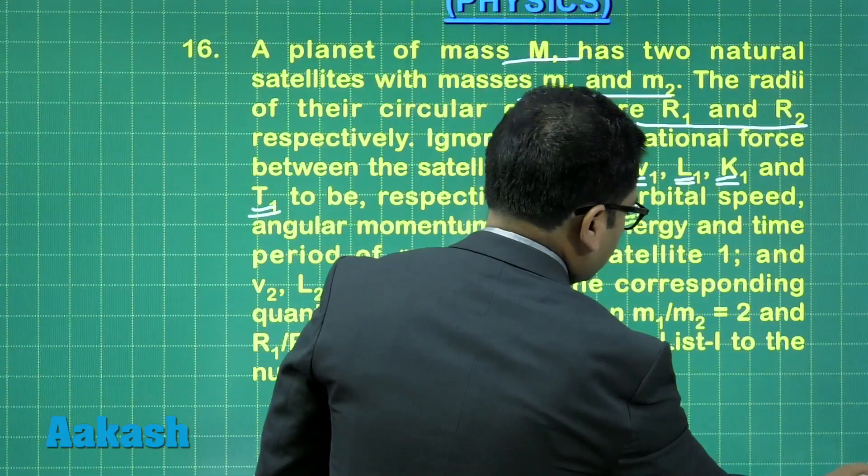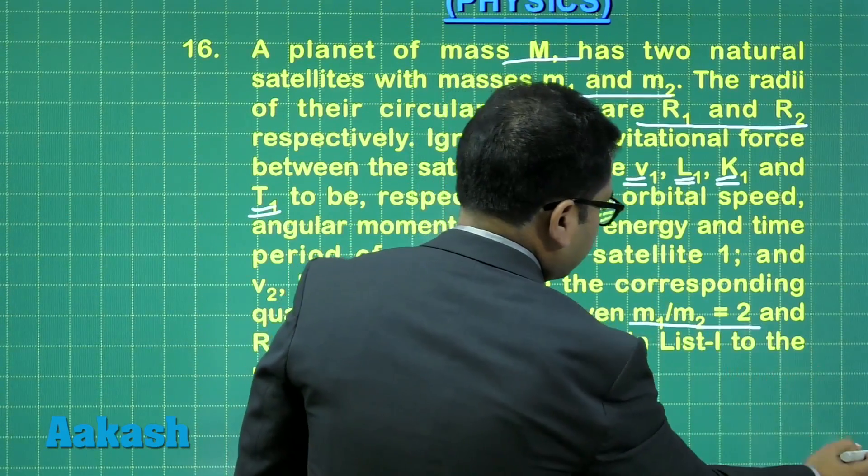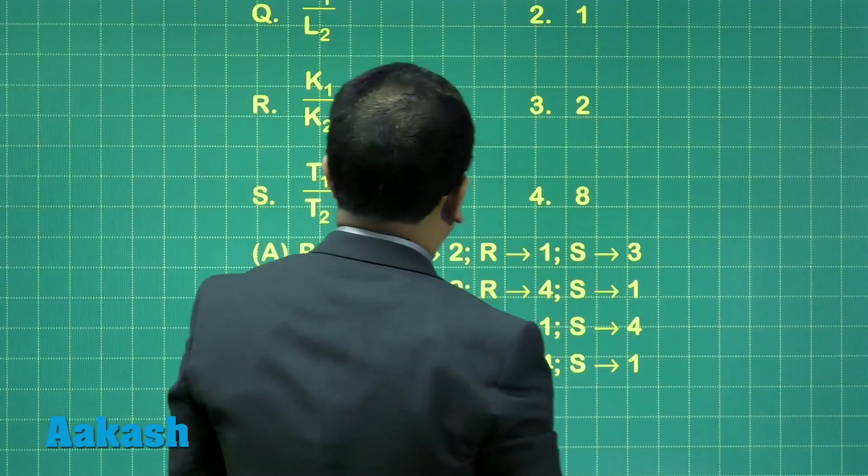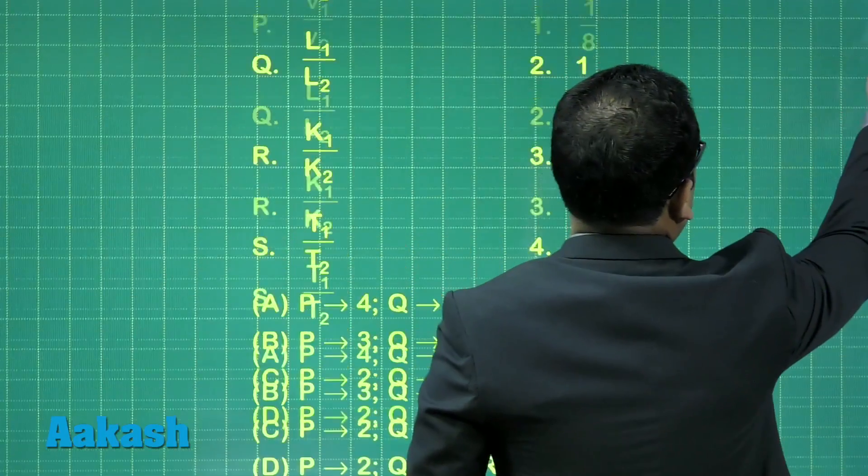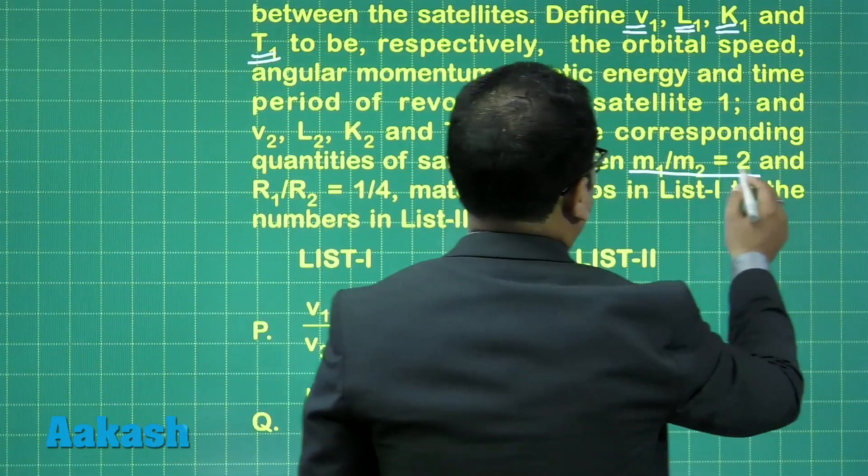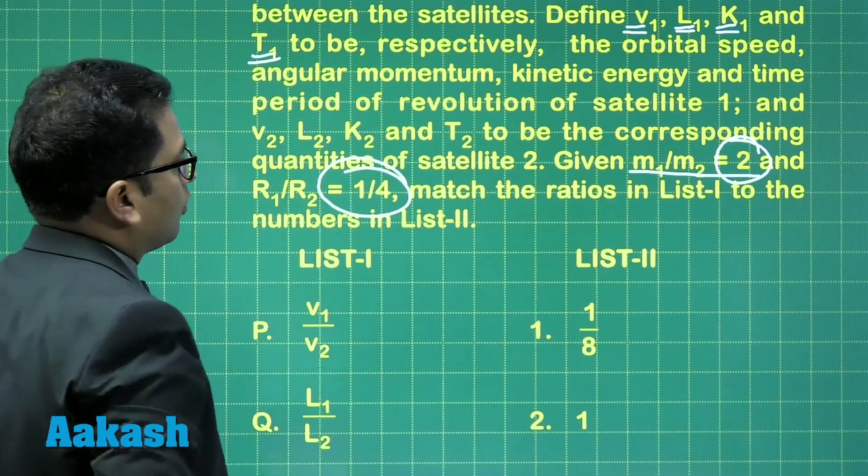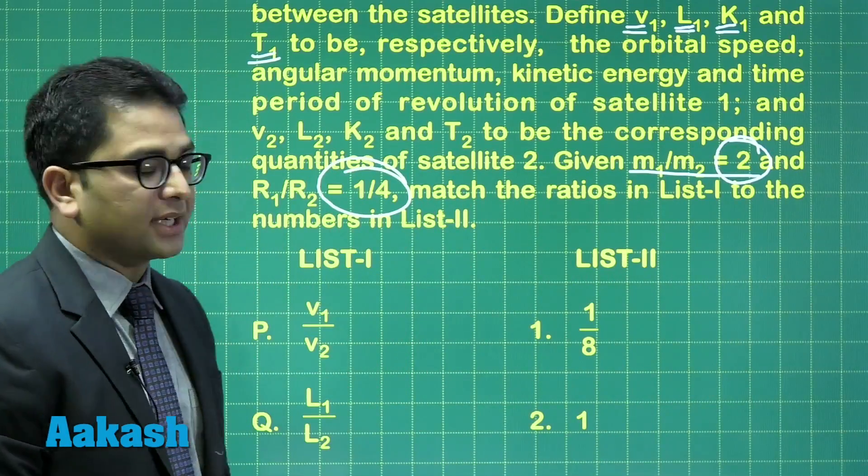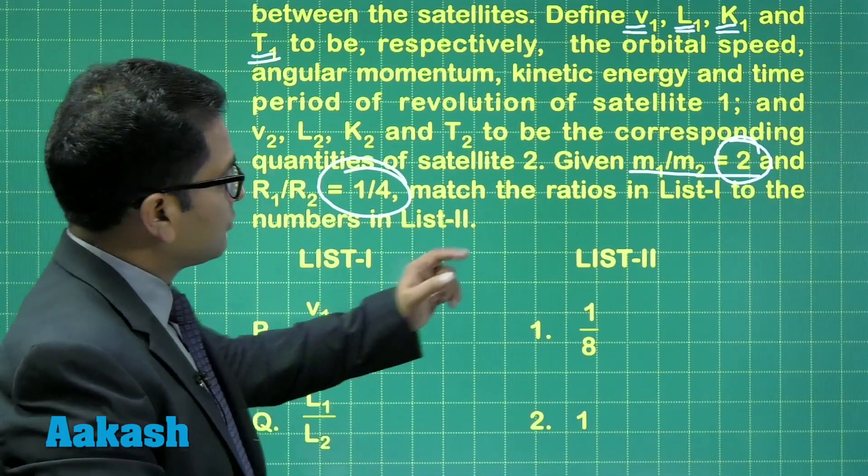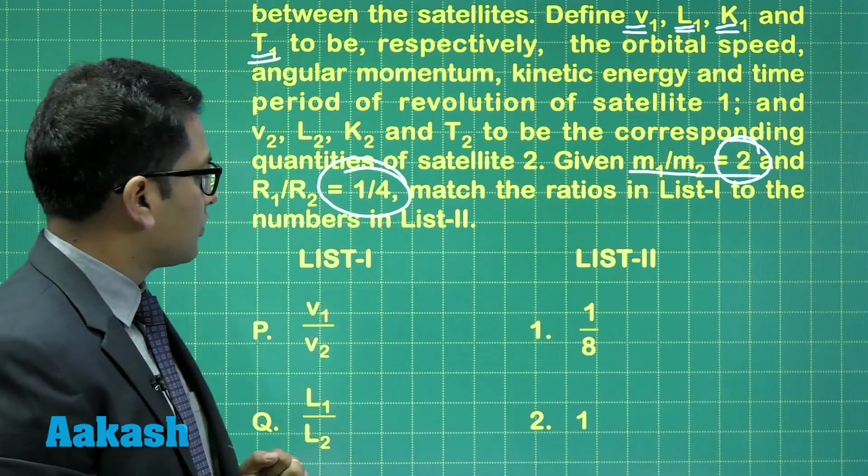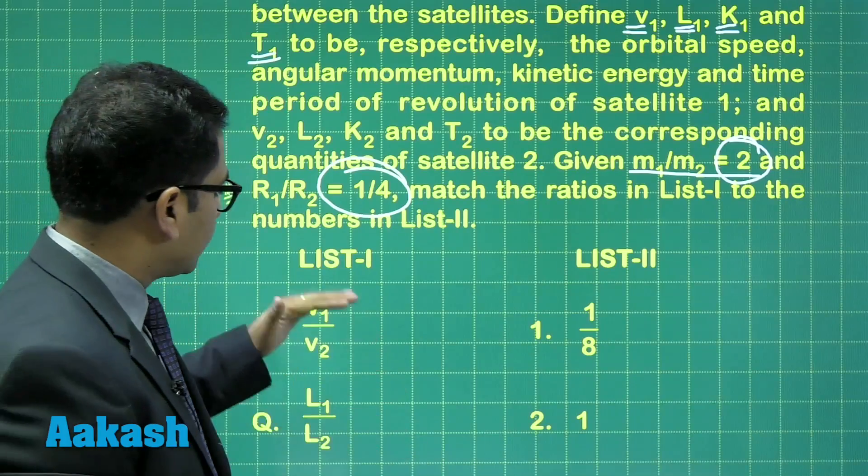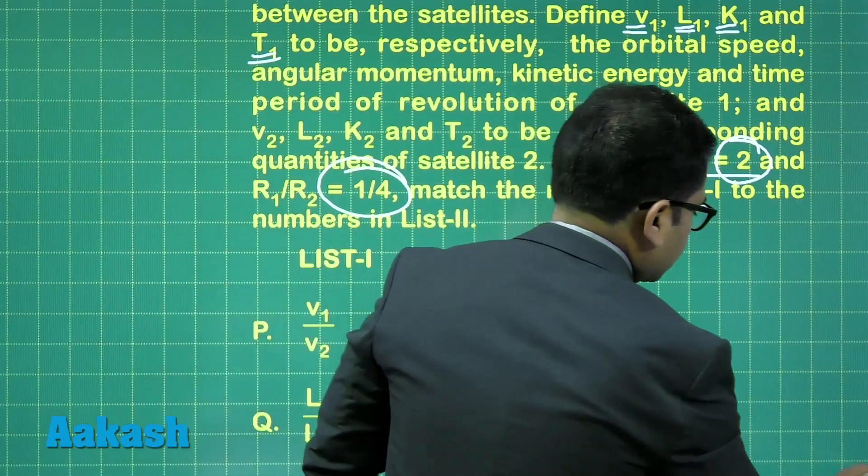The ratios have been given: M1 to M2 is 2, and R1 to R2 is 1/4. We need to calculate the ratios of V, L, kinetic energy, and time period.